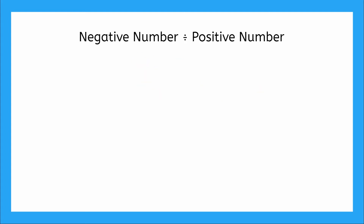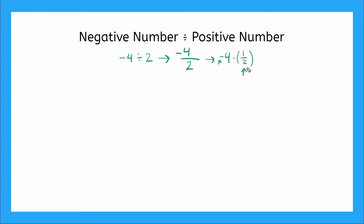Now what would happen if we have a negative number divided by a positive number? Say we have negative four divided by positive two. Using the same logic, we convert this to a fraction: negative four is our numerator, two goes in the denominator. We rewrite this as multiplication: negative four times one half. If I rewrite my multiplication as addition with a negative number, it means I'm actually subtracting one half four times: negative one half, subtracting again one half, one half, and one more time — four subtractions total.